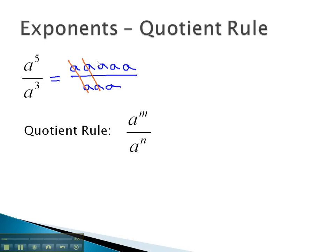By simplifying and dividing out the common factors, we find that the only ones left are the a squared in the numerator. We started with 5 a's and divided out 3. To find out how many are left, we can simply subtract 5 minus 3 to get the 2.